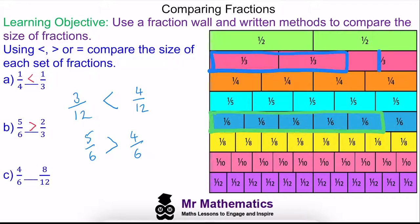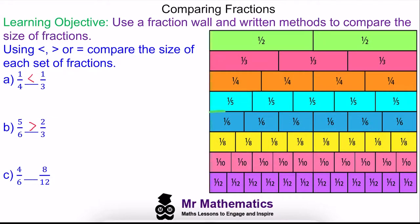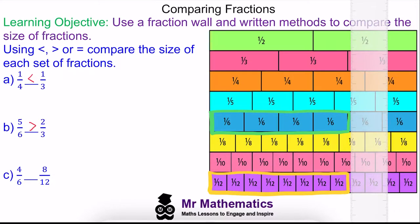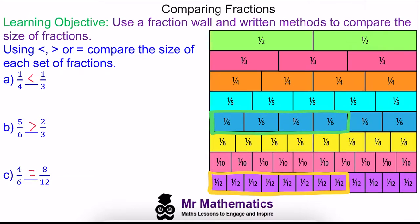Finally for question C, we have four over six compared to eight over twelve. Using our ruler you can see the two fractions are equal. Using the common denominator of 12, we multiply four sixths by two to make eight twelfths, which is indeed equal to eight over twelve. Thank you very much for watching — I hope you found that useful. Thanks again and take care.